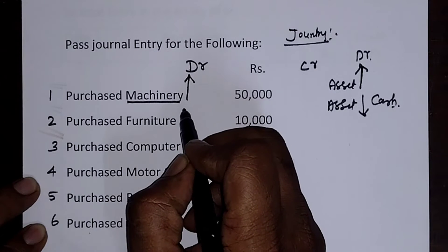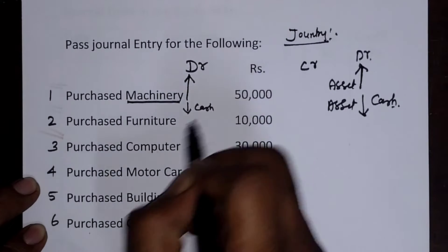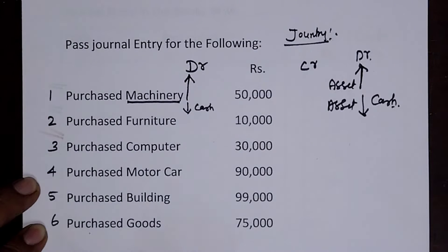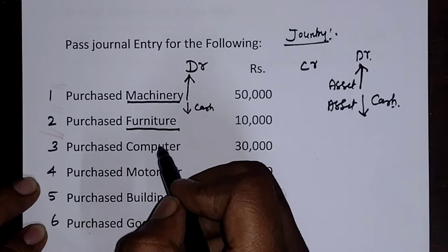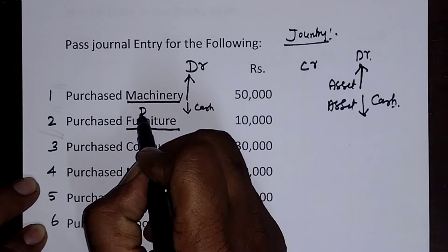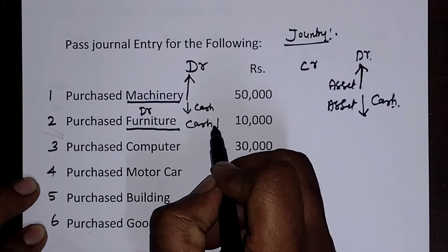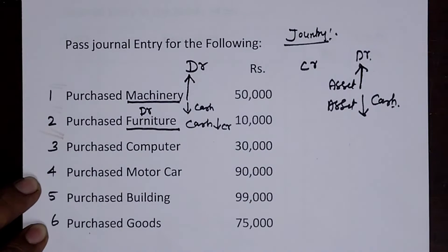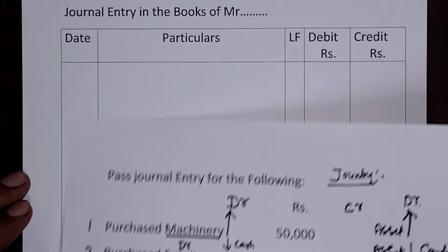Machinery account will appear in the debit since cash is going out, that will appear in the credit. In the same manner, furniture is entering into the business, therefore furniture will appear in the debit, and the cash going out will appear in the credit. Let me show this in the form of a journal entry.